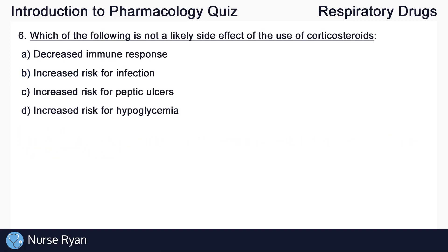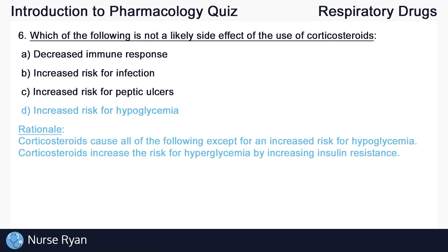Question number six. Which of the following is not a likely side effect of the use of corticosteroids? The answer here is D, an increased risk for hypoglycemia. Corticosteroids cause all of the following except an increased risk of hypoglycemia. Corticosteroids actually increase the risk of hyperglycemia by increasing insulin resistance.